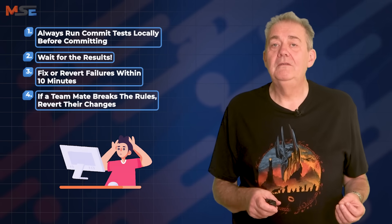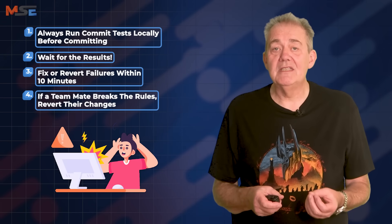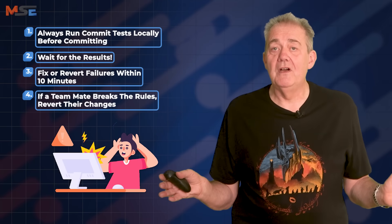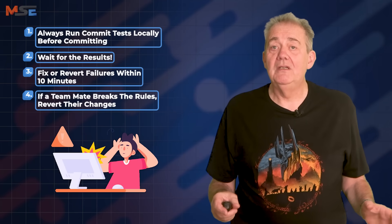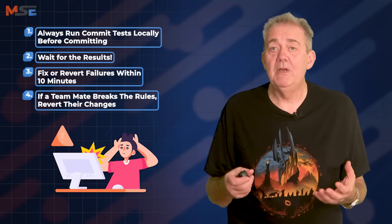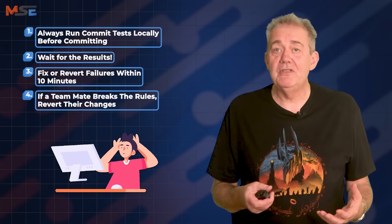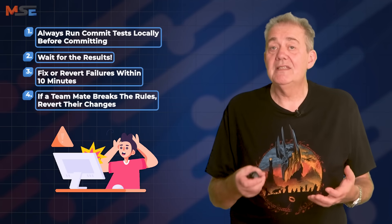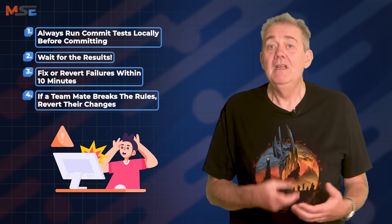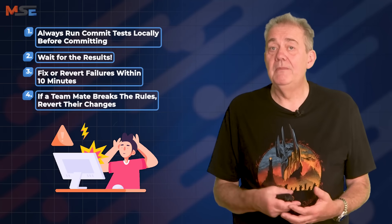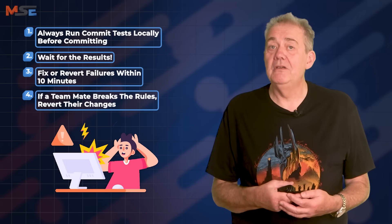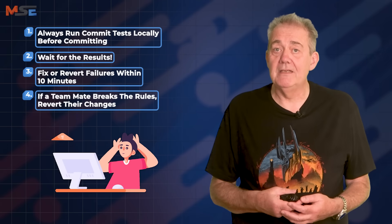Rule four: revert changes when necessary. If your teammate breaks any of these rules and leaves the build broken and goes away from the keyboard, revert their change for them. The deployment pipeline is a shared resource and it's important — it's our route to production, so we must keep it flowing. Be polite but firm. Let your teammate know that their code broke the build and encourage them to be better disciplined next time.